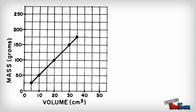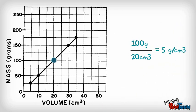If you pick any point on the graph, say this one, and divide its mass by its volume, you can determine the object's density. No matter which point you pick, the density will always be the same.